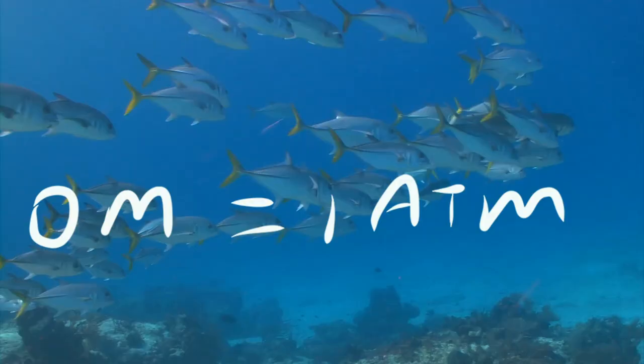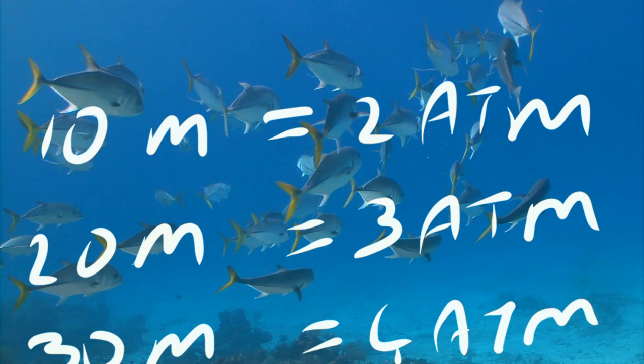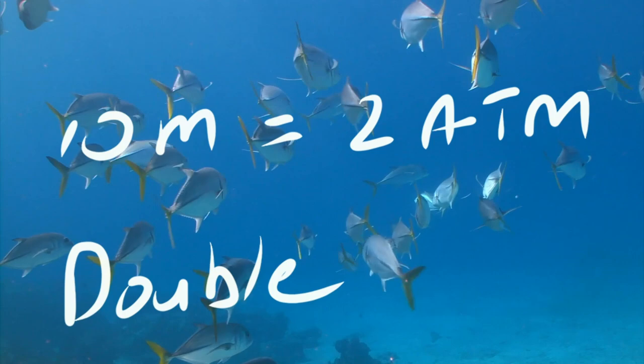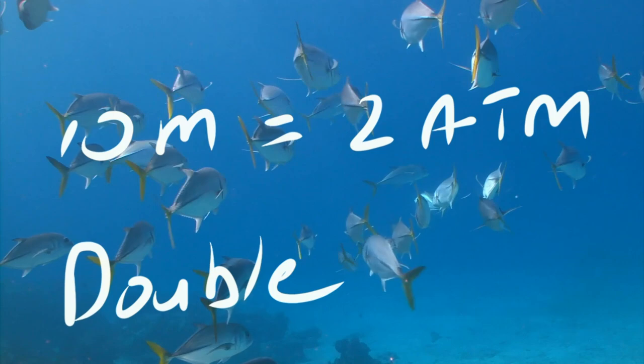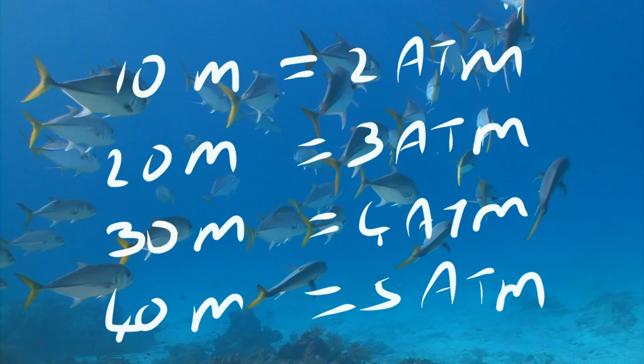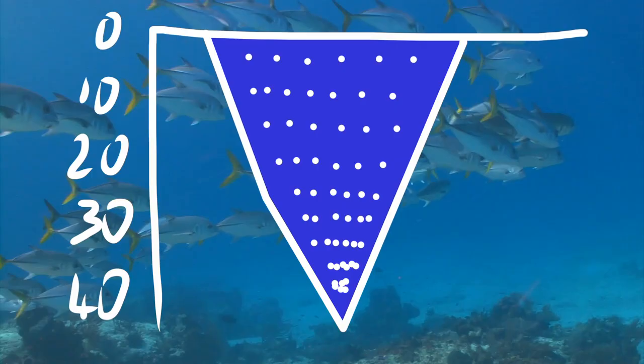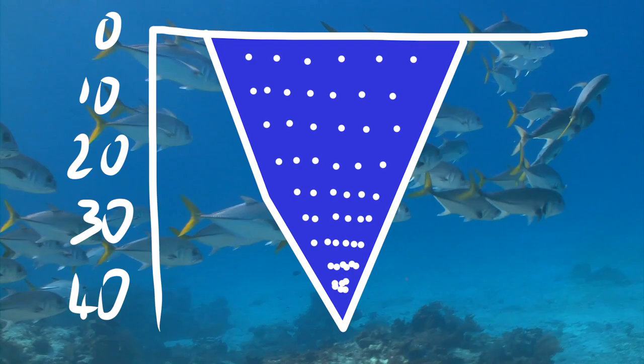At 10 meters, you have two atmospheres of pressure because you already have the one atmosphere of air pressure and now you're adding an additional atmosphere of water pressure. So at 20 meters, you have three atmospheres of pressure. At 30 meters, you have four atmospheres of pressure and so on. The pressure from the water increases the further you go down.